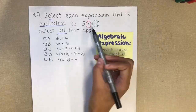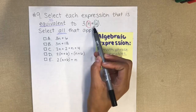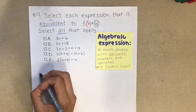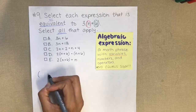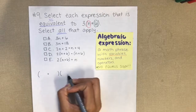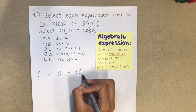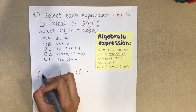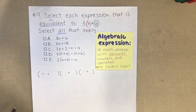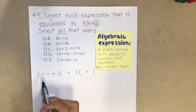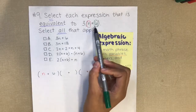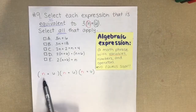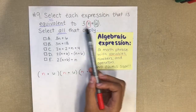Since multiplication is the same thing as repeated addition, multiplying by 3 means I have the phrase n plus 6 repeated 3 times. So I can write it as (n+6) plus (n+6) plus (n+6). This is the expanded form of the expression.